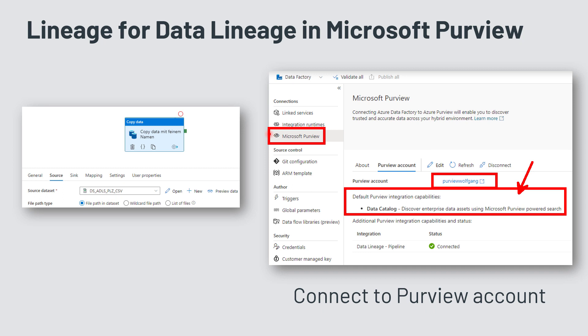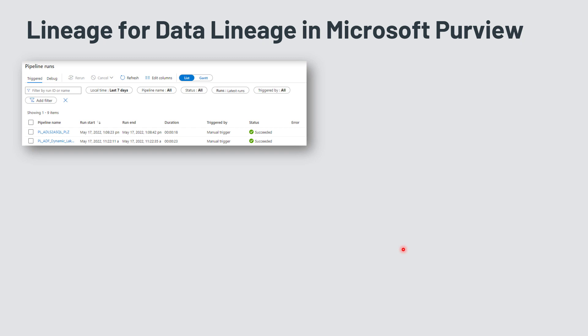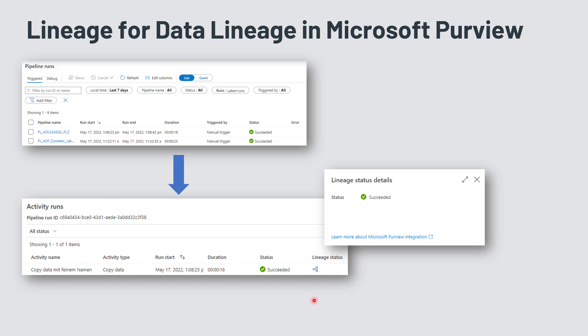You get two main functionalities: first, you can search your data catalog from within Data Factory, and second, you get the data lineage pipeline push. Everything considered for lineage is pushed from Data Factory into Purview. If you run the pipeline you can look at the pipeline runs and see the activity runs of the copy activity along with the lineage status being pushed into the data map and data catalog of Purview.